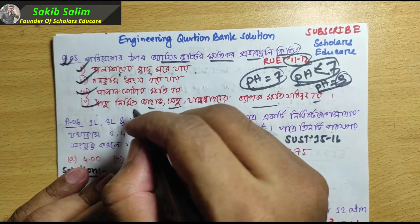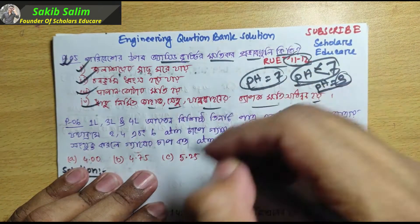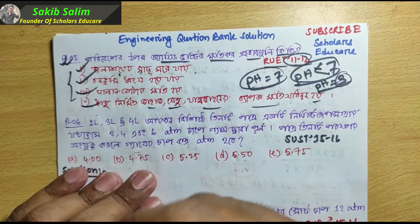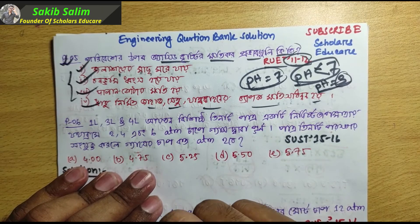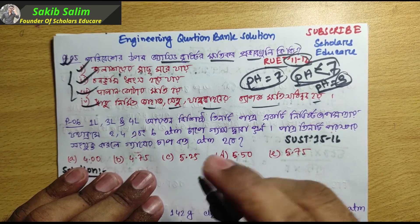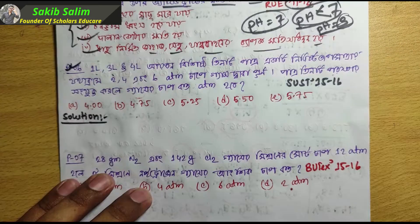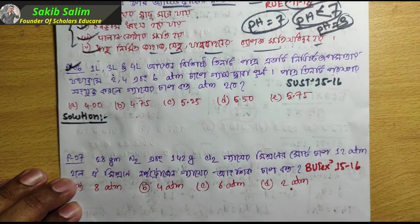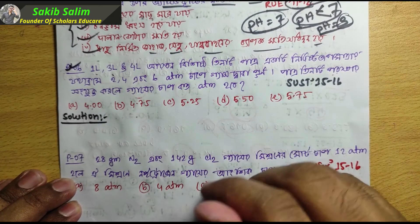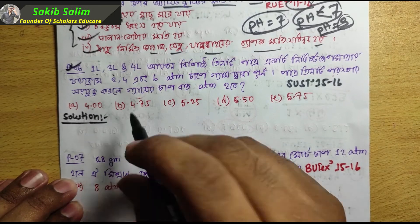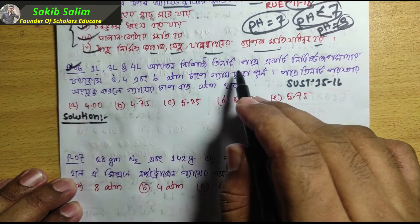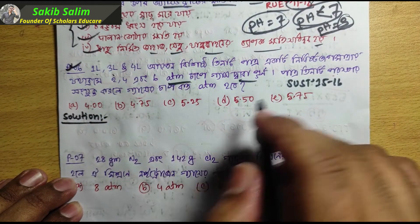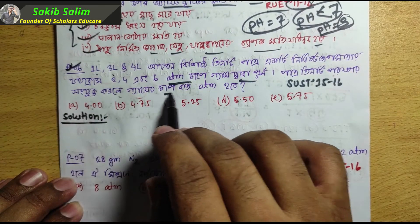If you look at this video, you can note down the most important things. This is a very interesting question. We should solve it: 1 liter, 3 liters, and 6 atomic plates — P3 and 4 atoms — so the gas is treated as a traceable system.